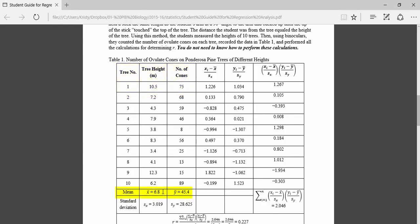They've calculated the means of the tree height here and the means of the number of cones. And then they have taken the difference of each of those X values from the X mean and divided it by the standard deviation. They've done the same for the Y values. And then in this column here, they've multiplied those X with Y. And then down here, they've summed it up.